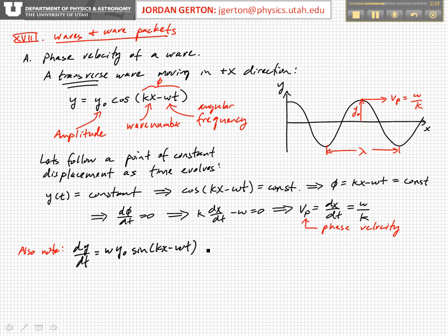And then also, the second derivative with respect to time is equal to, now there's the minus sign, -ω² y₀ cos(kx - ωt).